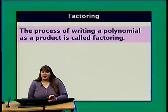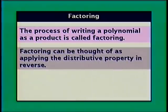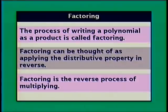The process of writing a polynomial as a product is called factoring. Factoring can be thought of as applying the distributive property in reverse — the reverse process of multiplying.